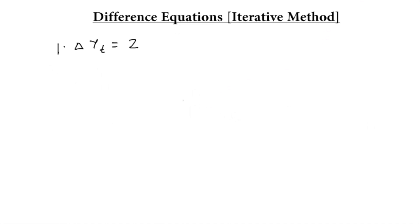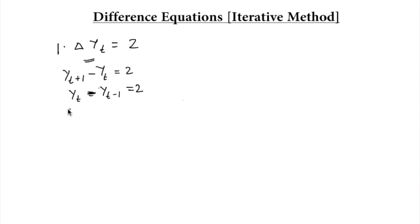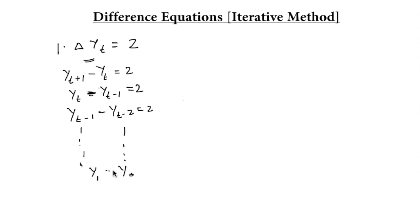Let's start from the first type of equation: change in yt is equal to 2. What is the difference equation? The two time periods is a gap. It can be written as yt+1 minus yt is equal to 2, or as yt minus yt-1 is equal to 2, or as yt-1 minus yt-2 is equal to 2. This process can go on until the initial value y0 followed by y1. This difference equation represents a gap of t periods.